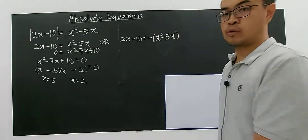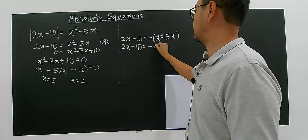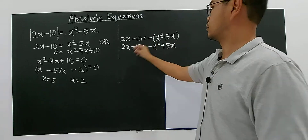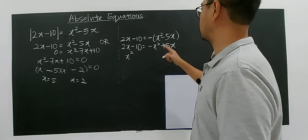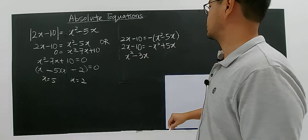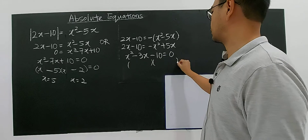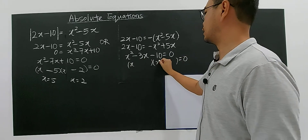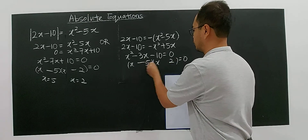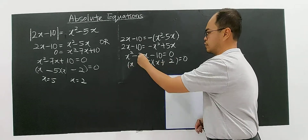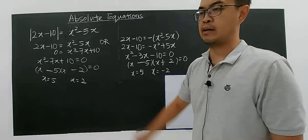For the second case, 2x minus 10 equals negative x squared plus 5x. Rearranging into general quadratic form: x squared plus 2x minus 5x gives negative 3x, minus 10 equals 0. Factorizing with 5 and 2 — negative 5 plus 2 gives negative 3 — you get one identical solution: x equals 5, and the other is x equals negative 2.